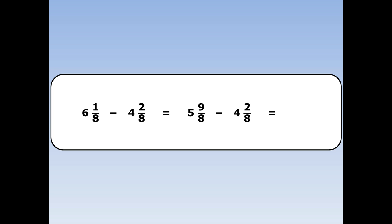Then I continue as before. Take away the whole numbers from the whole numbers: 5 take away 4 is 1. Then I take away the fractions: 9 eighths take away 2 eighths is 7 eighths. 1 and 7 eighths is the final answer.